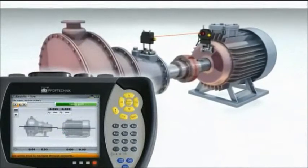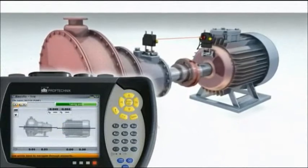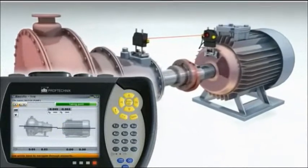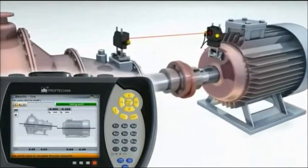Live Trend can display both horizontal and vertical coupling alignment values and feet position. Results can be in millimeters or in inches.